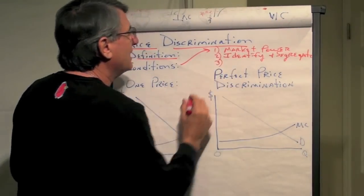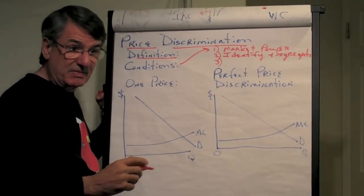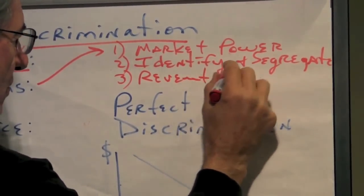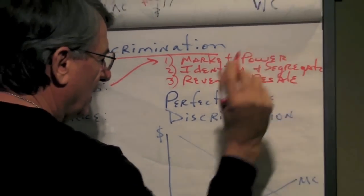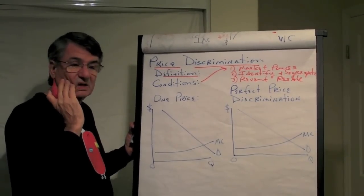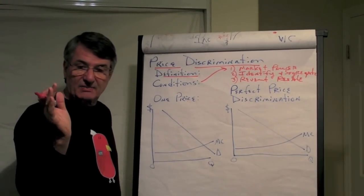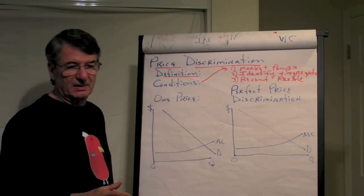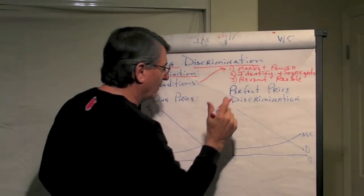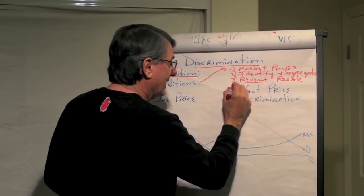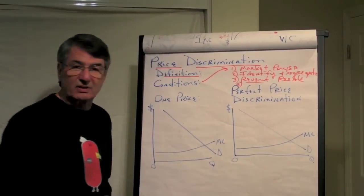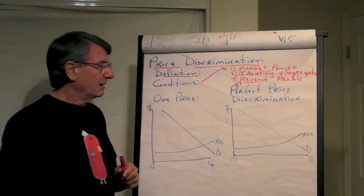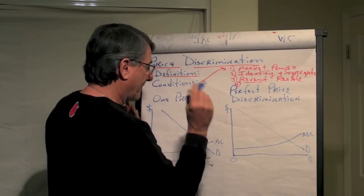And the third is, they must be able, there must be some method to prevent resale. If you can't prevent resale, what happens is the elastic types buy it at the low price and then sell it to the inelastic types at a price less than you would sell it to them for. And so it won't work unless you can prevent resale. Now, there is a fourth thing and that is you have to learn to tell a good story that explains your behavior. Otherwise, people will yell at you and DAs will come after you.